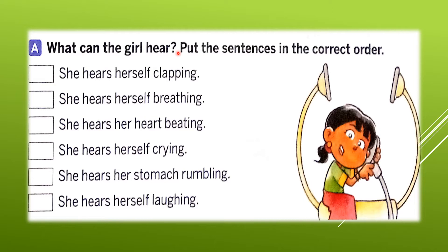Question A: What can the girl hear? Put the sentences in the correct order. These sentences are given from the story. The girl can hear many things. We have to put number 1, 2, 3, 4, 5 and 6 one by one according to the story. Let us see what the girl can hear first.